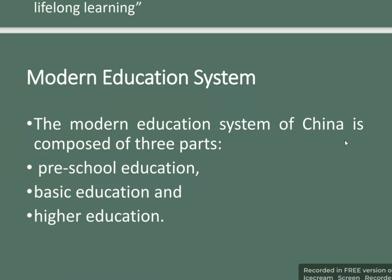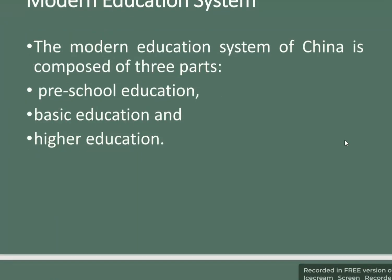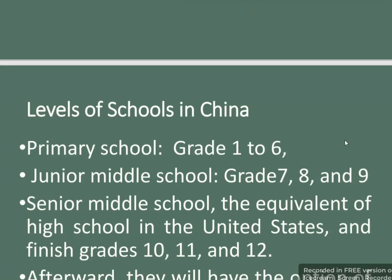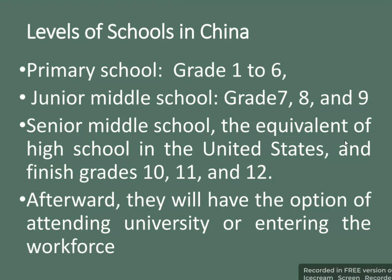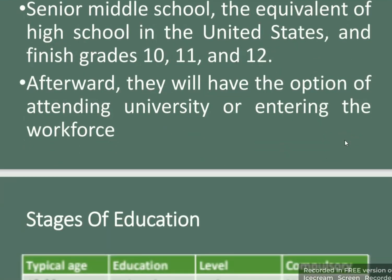Modern China's education system is composed of three parts: pre-school education, basic education, and higher education. The levels of schools in China are: primary school for grades 1 to 6, junior middle school for grades 7, 8, and 9, and senior middle school — equivalent to high school in the US — for grades 10, 11, and 12. Afterward, students have the option of attending university or entering the workforce.